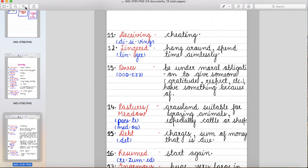Thirteenth owe. That means be under moral obligation to give someone gratitude, respect, etc. and have something because of. Kisi ki wajah se tumhe koi fayda hota hai that is called as owe.